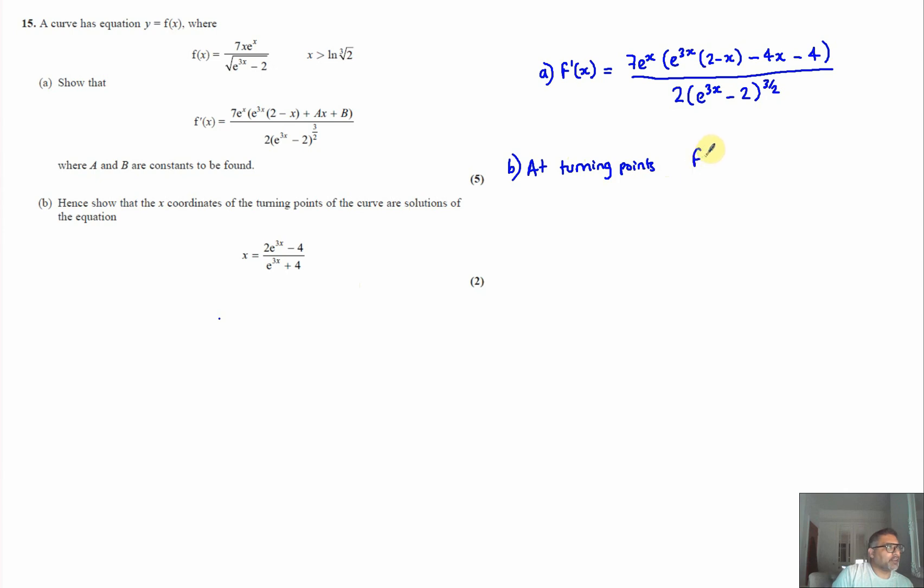the derivative, the gradient function, is equal to zero. So I can set this equation equal to zero. Let's do that first: seven e to the x times e to the three x times two minus x minus